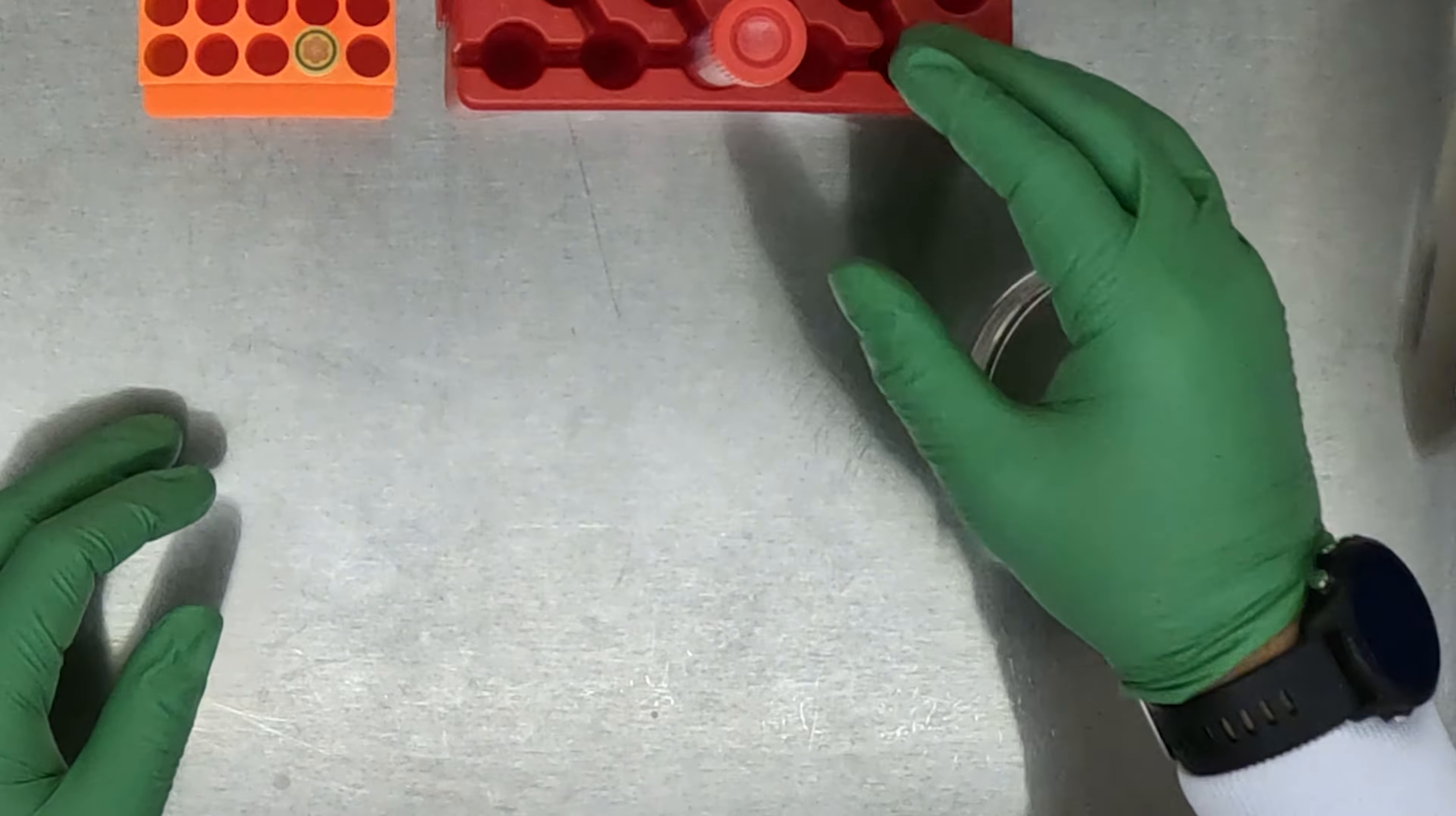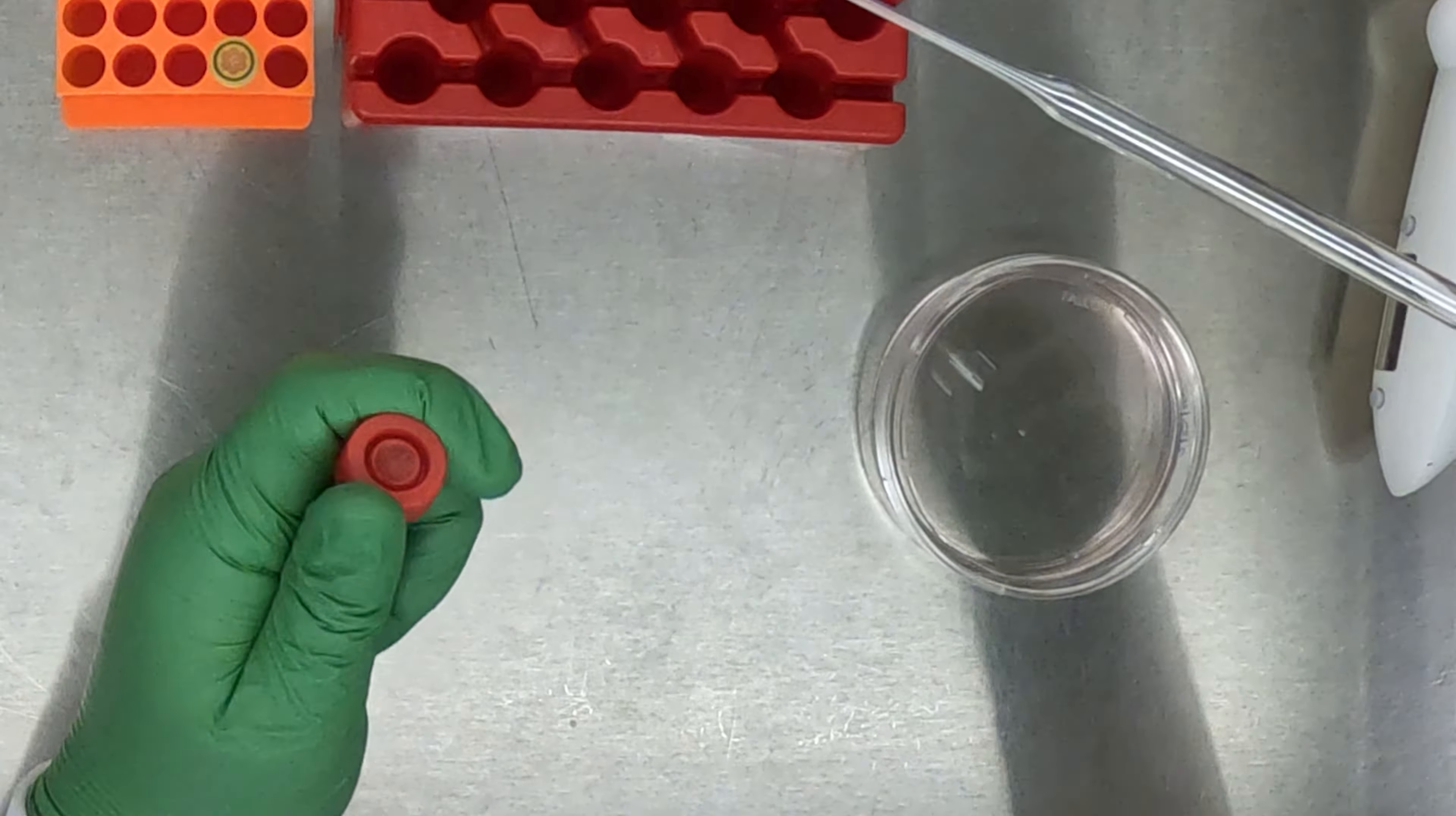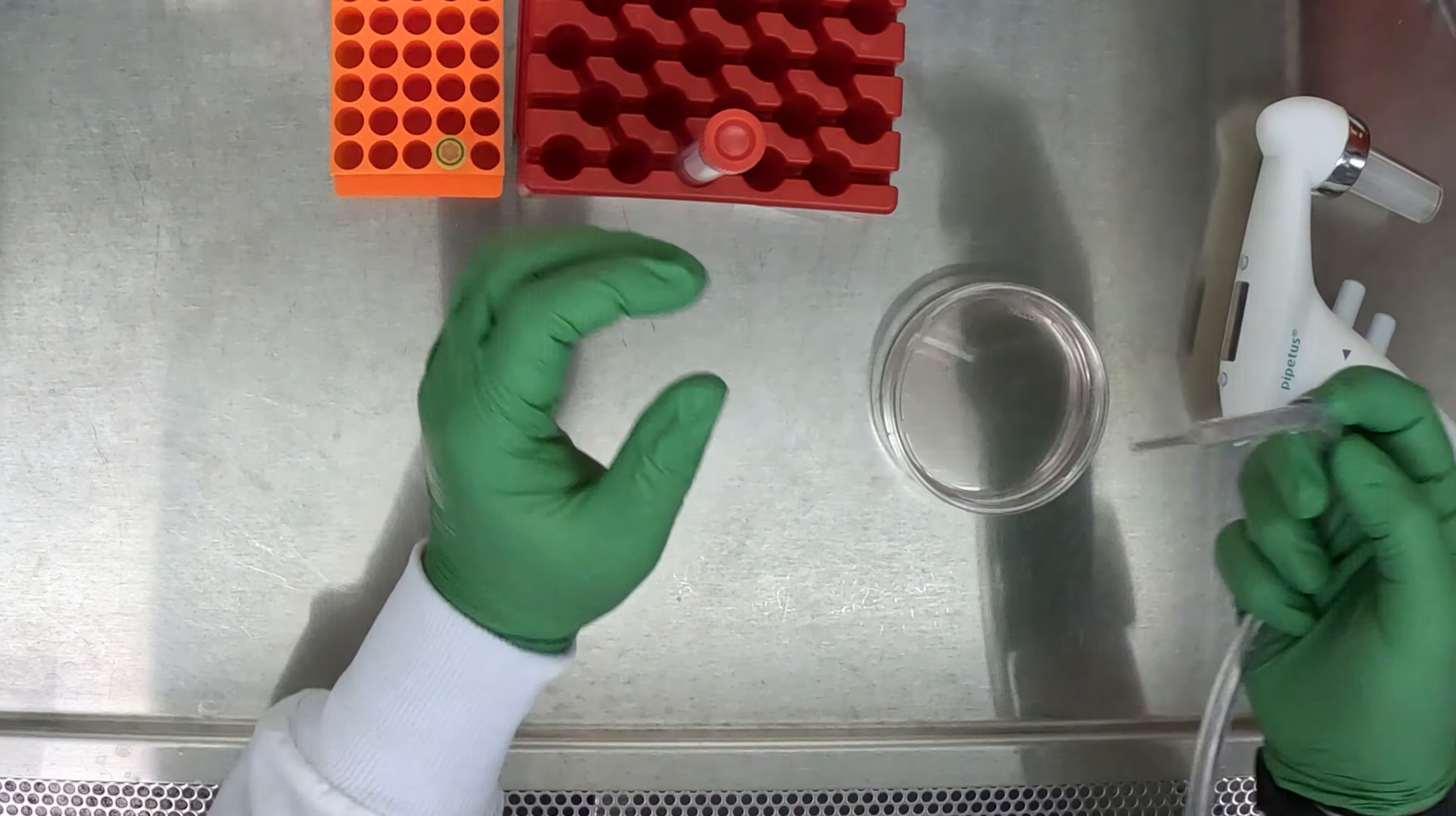Now that we've prepared our recovery plate, let's return back to our conical with our cells. Let's gently aspirate all of the supernatant off of the cells, being extra careful to not disturb the pellet at the bottom.